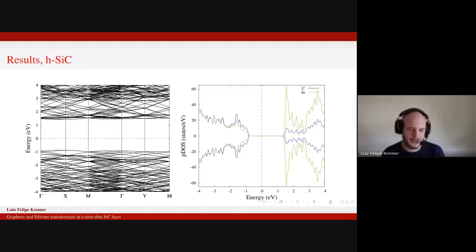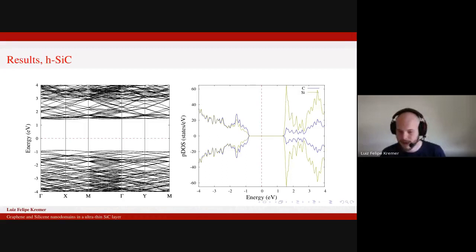As you can see in the right, we have carbon atoms mainly forming your valence band maximum and silicon forming your conduction band minimum, which is the part above Fermi energy, which is set as zero energy in both graphics.